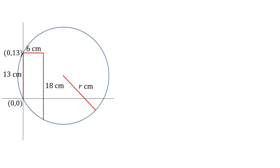If we now go across 6 centimetres and down 18 centimetres we'll get to the bottom of the other vertical line. From (0, 13), if we go across 6 and down 13, we would get the coordinate (6, -5). We're also going to call the centre of the circle our unknowns a and b.